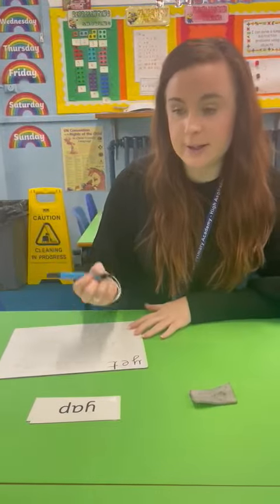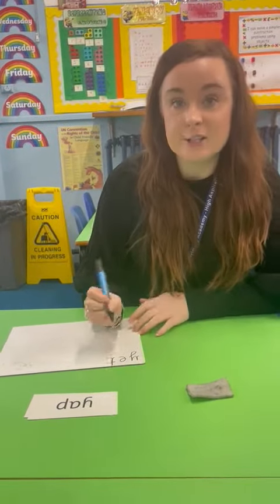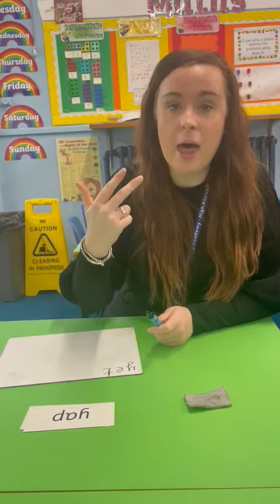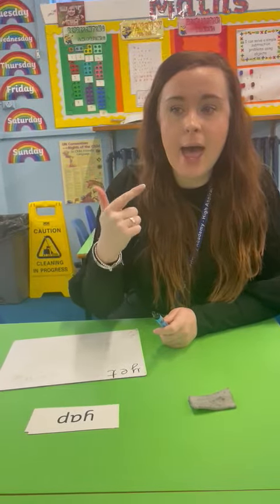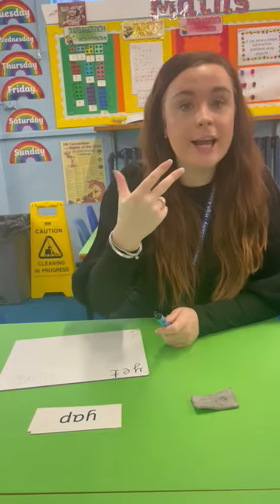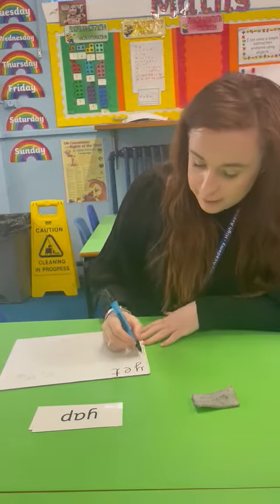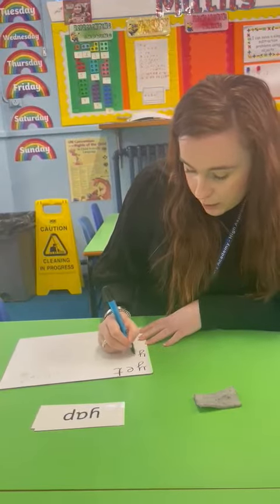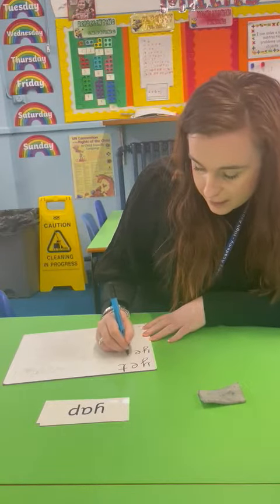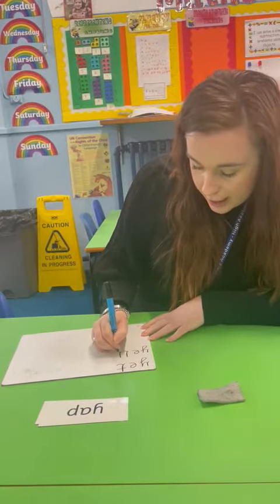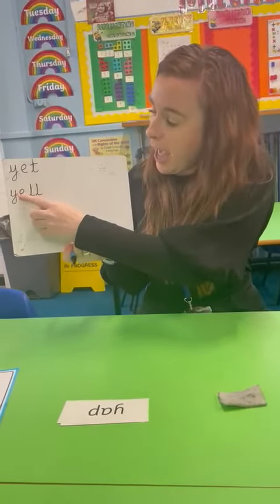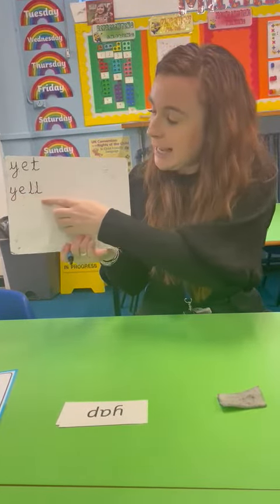Could you have a go now at writing the word YEL? So we're going to segment first and listen for the sounds. So we've got Y, E, L. Let's do it once more: Y, E, L. Again, I can hear the Y phoneme at the beginning, the E in the middle, and then the L at the end. So we've got Y, E, L.